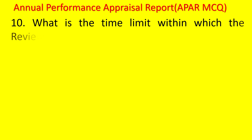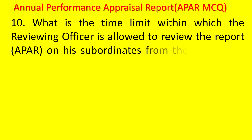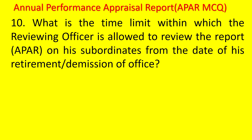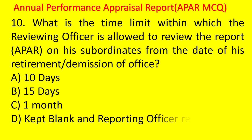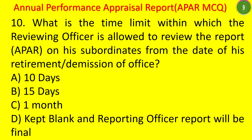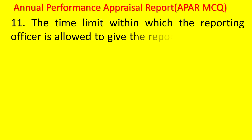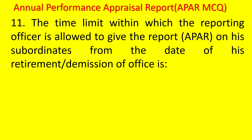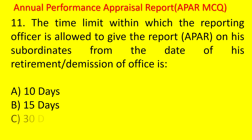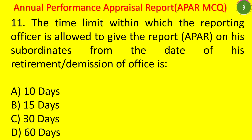MCQ: What is the time limit within which a reviewing officer is allowed to review a report from the date of his retirement or demission of office — 10 days, 15 days, 1 month, or kept blank? The answer is 1 month. MCQ: What is the time limit for the reporting officer to give the report from the date of his retirement or demission of office — 10 days, 15 days, 30 days, or 60 days? The answer is 30 days.